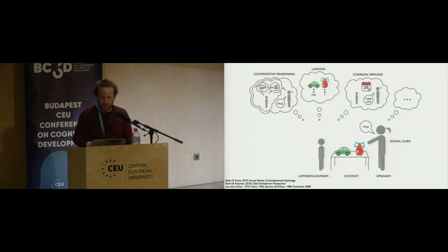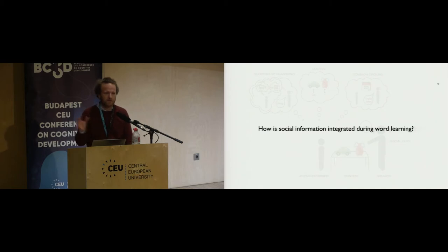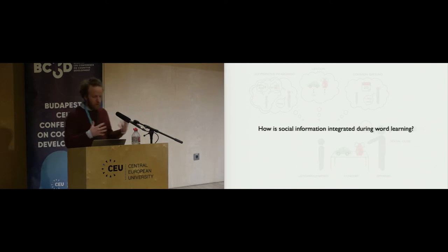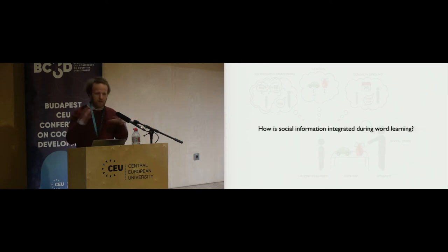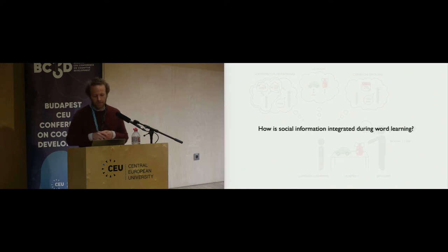This paints a fairly complex picture of the different information sources available to the child at a given time. The question we are asking is: how are these different information sources integrated with one another? Most studies look at one of these aspects and find that children can use each individually. We were interested in how they integrate these different information sources, and at the core of addressing this question is a computational model I will discuss later. For clarity, I'll walk through the empirical part first.